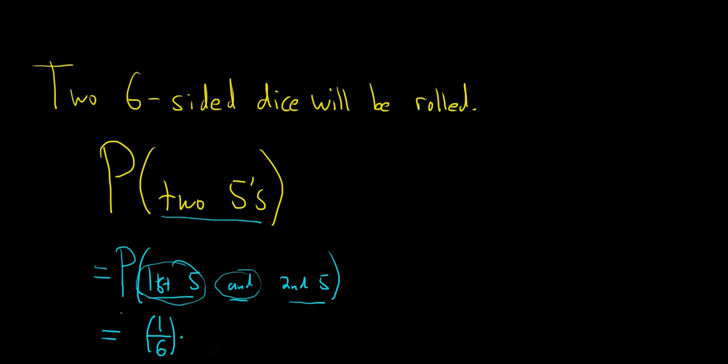And the second one is a five. So there is one way for the die to land on five, and six ways for it to land. So you get one over six.